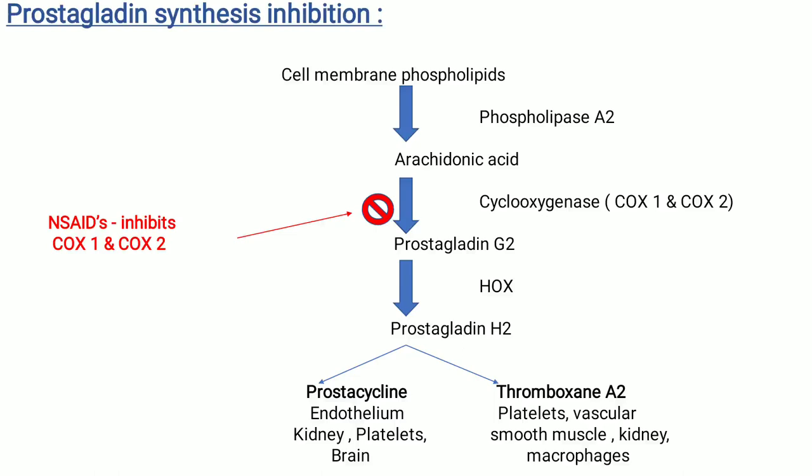Now let us see prostaglandin synthesis inhibition. During pain, fever, and inflammation, arachidonic acid is liberated from the phospholipid fraction of the cell membrane by the enzyme phospholipase A2. Arachidonic acid is converted into prostaglandin G2 by the enzyme cyclooxygenase — COX-1 and COX-2. Then prostaglandin G2 is converted into prostaglandin H2. Prostaglandin H2 is converted into prostacyclin and thromboxane A2. These are called prostanoids, and this is how synthesis of prostaglandin takes place. As NSAIDs inhibit COX-1 and COX-2, the conversion of arachidonic acid to prostaglandin G2 does not take place, and thus further reaction does not occur.